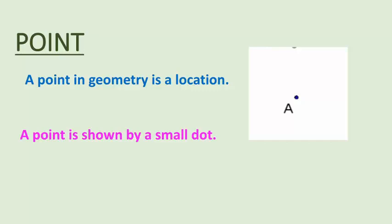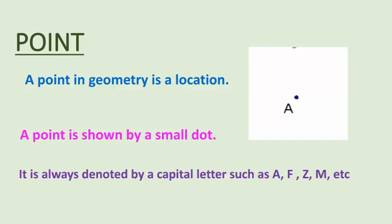A point has no size, meaning no length, no width, and no depth. A point is shown by a small dot, as you can see on the screen. We represent this small dot by a capital letter A. Always we denote a point by a capital letter such as A, F, Z, M, etc.